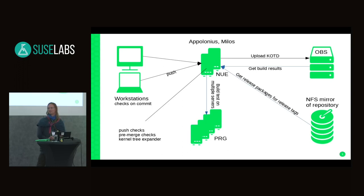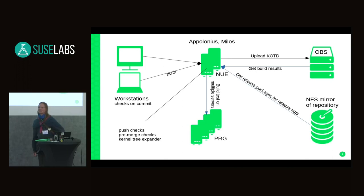Other config options' availability depends on these environment config options, so the only way to get a correct config today is to use the correct GCC version. There are differences, for example, between GCC 7 (in SLE 15 and OpenSUSE 15.0/15.1) and GCC 9 from Tumbleweed, and differences between architectures. Personally I use cross-compilers and modify 'make oldconfig' to use them if available, to refresh configs on both SLE 15 SP2 and master.